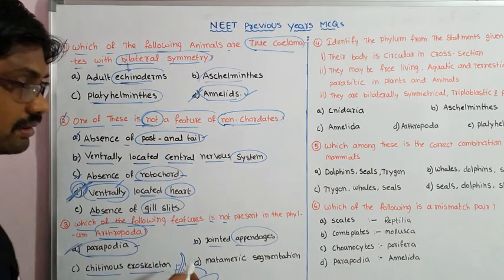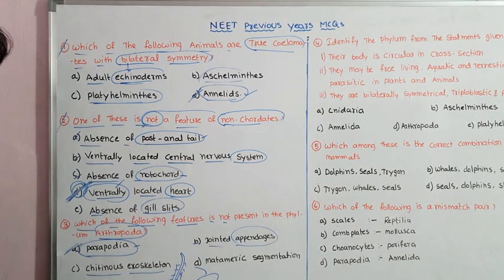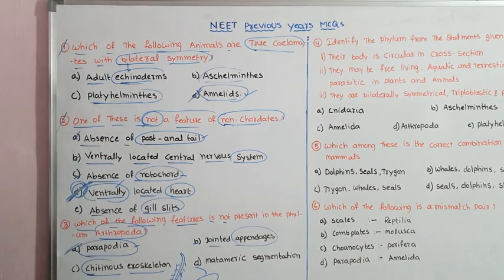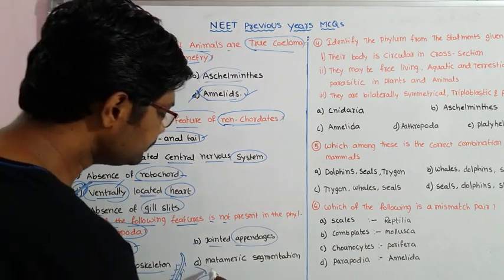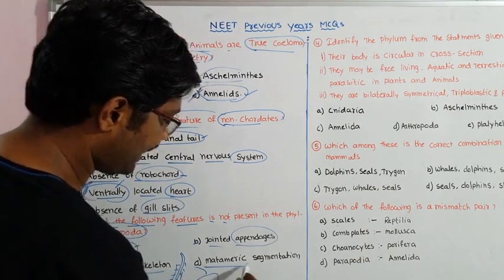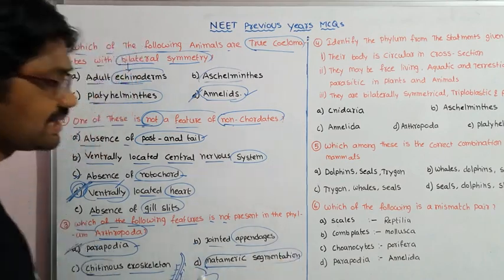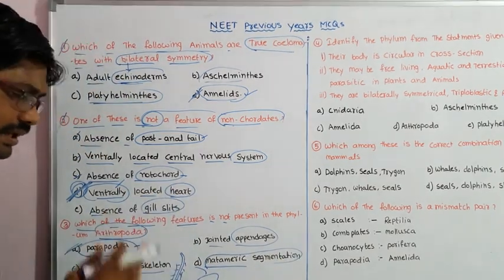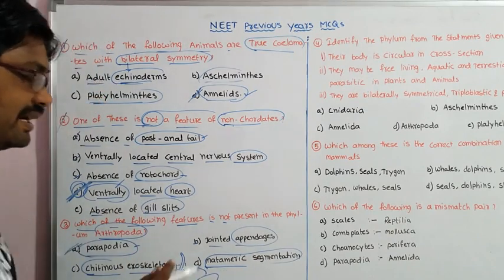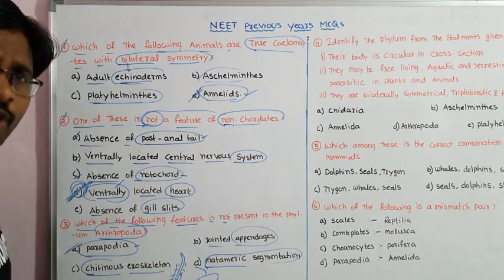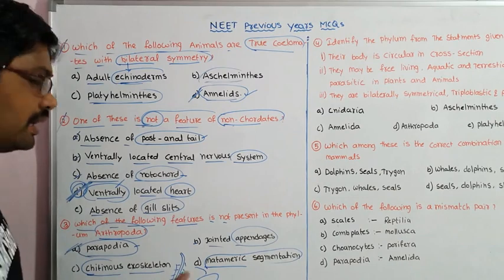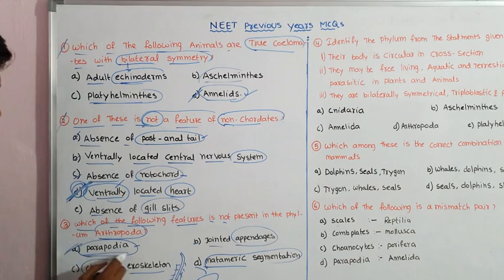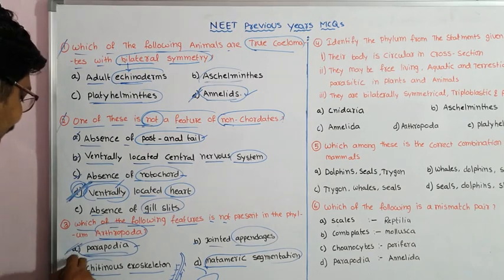Next feature: chitin exoskeleton — in Arthropods, the exoskeleton system is formed by chitin. Next: metameric segmentation — metameric segmentation is true segmentation, clearly visible on both inner and outer sides. So metameric segmentation is a feature of Arthropoda. Therefore, parapodium is not present in Arthropoda and that is the answer.